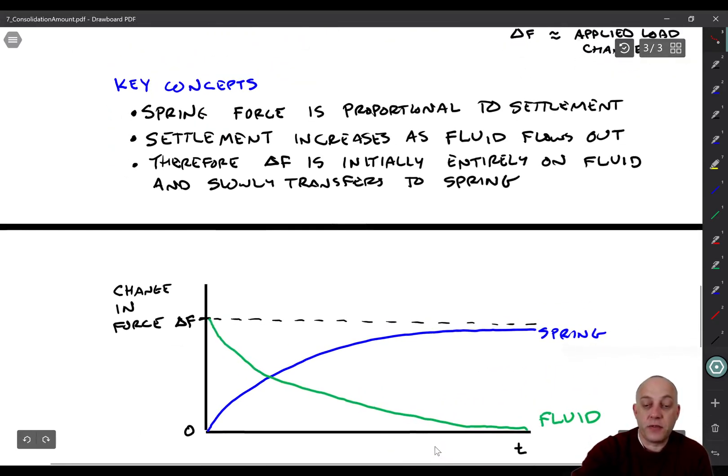Alright, so key concepts are that the spring force is proportional to settlement, okay? There is no load in the spring until the spring gets deformed, right? F is equal to K times U, where F is force, K is stiffness, and U is displacement.